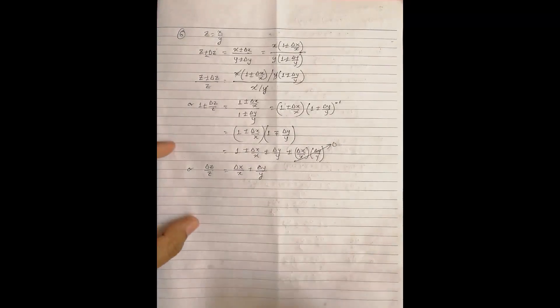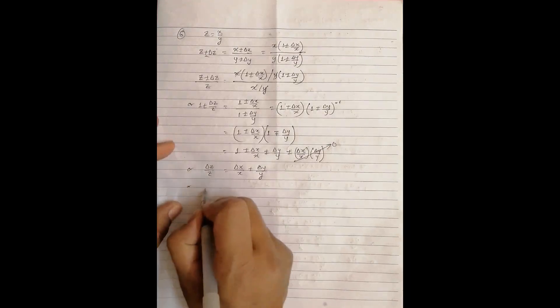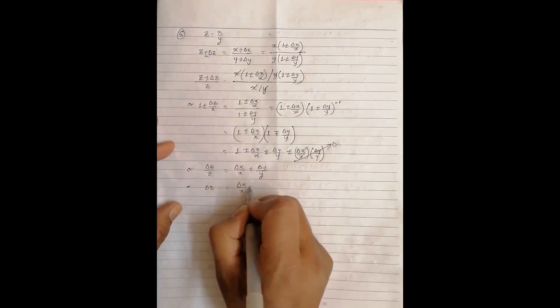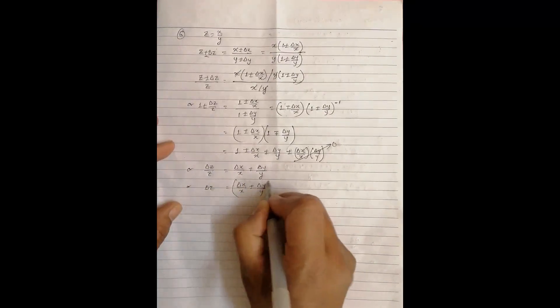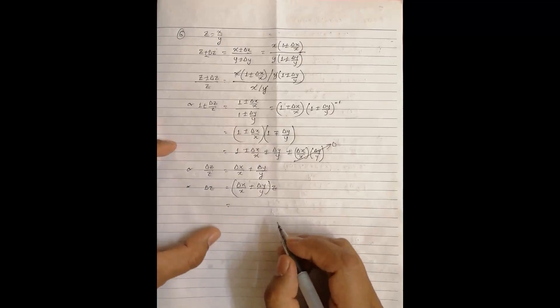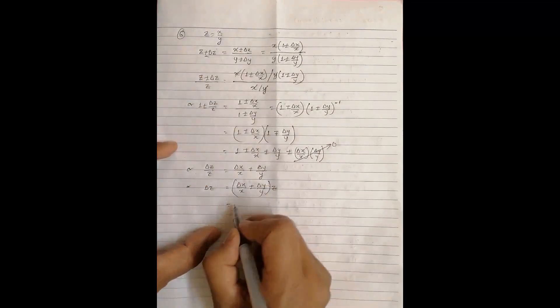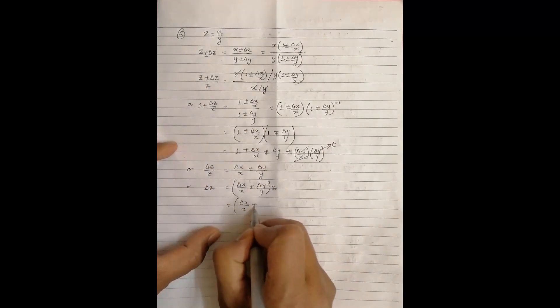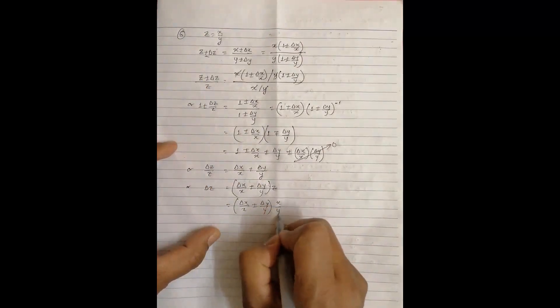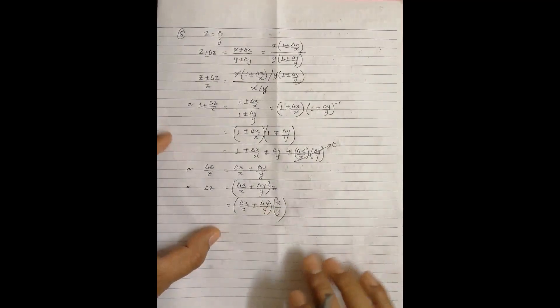So what is happening is: the fractional error during division is the same as the fractional error during multiplication. But when you go for the absolute error, delta z equals delta x by x plus minus delta y by y, into z. But if you put the value of z as x by y, things become different. So that is the case of division.